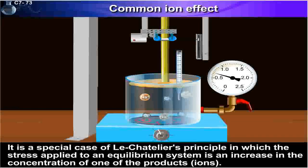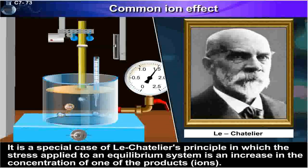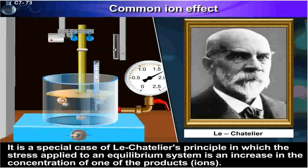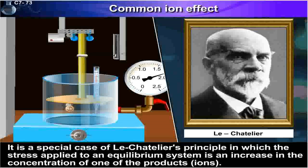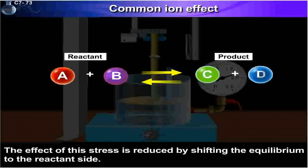It is a special case of Le Chatelier's principle, in which the stress applied to an equilibrium system is an increase in the concentration of one of the products — that is, ions. The effect of this stress is reduced by shifting the equilibrium to the reactant side.